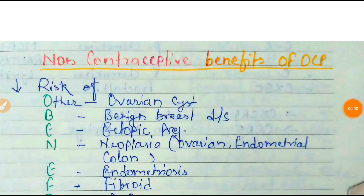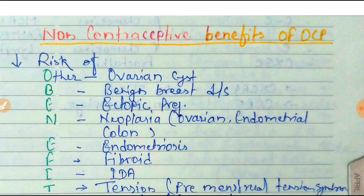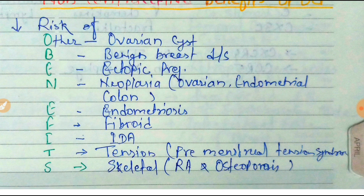Today's topic is the non-contraceptive benefits of OCP — that means decreased risk of other conditions. Starting with the mnemonic OTHER: O is for ovarian cyst, B for benign breast disease, E for ectopic pregnancy, and N for neoplasia.